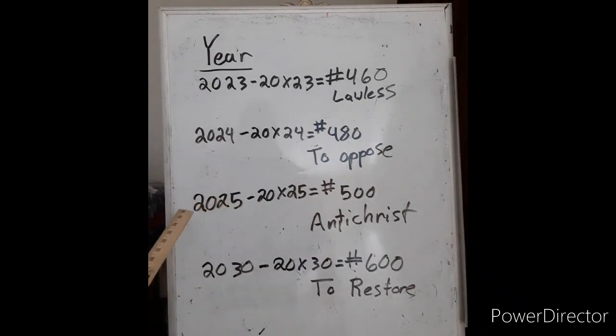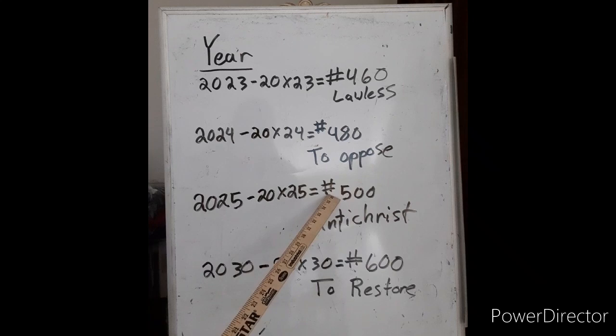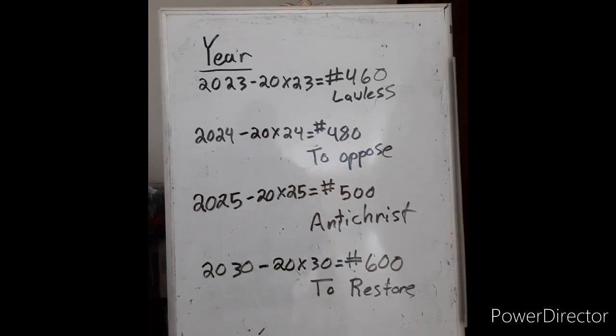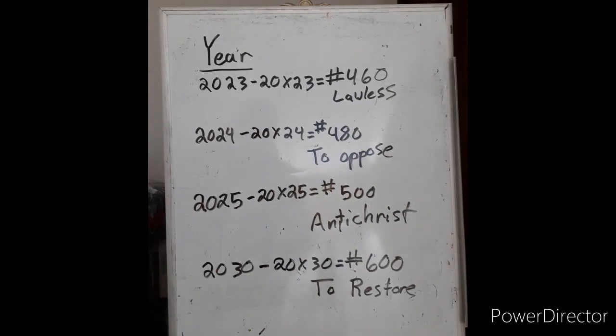2025, let's multiply it. 20 times 25 is the number 500. In the Strong's concordance Greek, the number 500 is Antichrist, right in the middle of the seven years. I've shown you guys this before, but matching it up with being fruitful and multiplying. God told us to multiply.